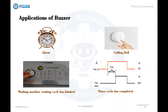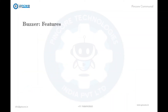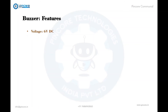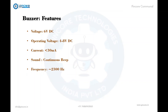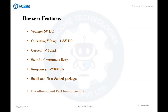Here are a few features of the buzzer: the voltage which can be given is 6 volts DC; the operating voltage is between 4 to 8 volts DC; the current is 30 milliamps; the sound produced is a continuous beep; the frequency used is 2300 Hz; and it comes in a very small, neatly sealed package which is friendly with breadboard and perfboard connections.